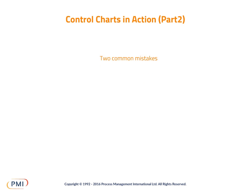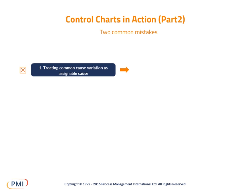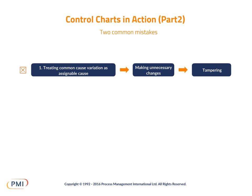There are two common types of mistakes that are made. First, treating common cause as assignable cause variation. This can lead to making changes that are inappropriate — this is also called tampering with the process.